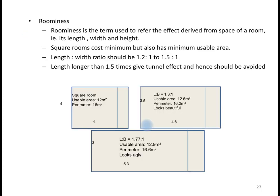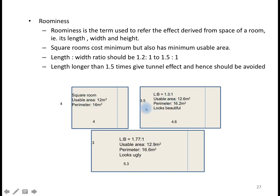The next point is roominess. Roominess refers to the effect derived from the space of a room — the ratio of its length, width, and height. Square rooms are economical in cost but have minimum usable area. For example, a 4×4 meter square room — after leaving passage area near the door — reduces the usable area significantly. Whereas a room of 4.6 by 3.5 meters looks beautiful and has sufficient usable area for the people.